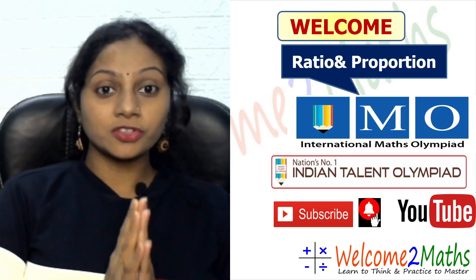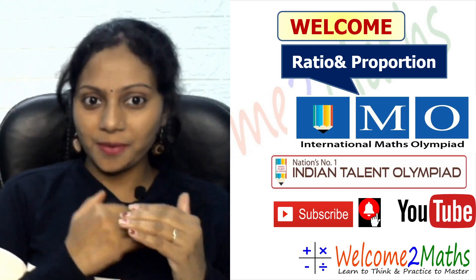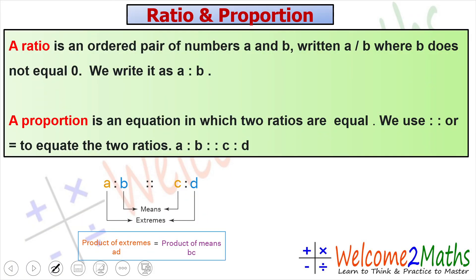So let's discuss ratio and proportion. First, what is ratio? A ratio is an ordered pair of numbers a and b, written as a/b where b doesn't equal zero. We write it as 'a is to b'.